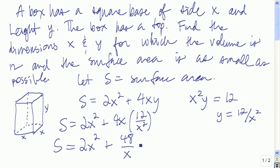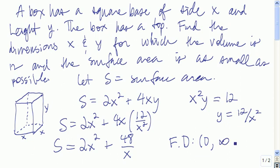The next thing we need to do is write the feasible domain for the problem. x can't be negative because it's a dimension of a box, and x can't be 0 because then there's no way the volume would be 12. So the feasible domain starts at 0 but doesn't include 0. x can be as large as it wants — to maintain a volume of 12, y will just have to be smaller. So the feasible domain is from 0 to infinity.